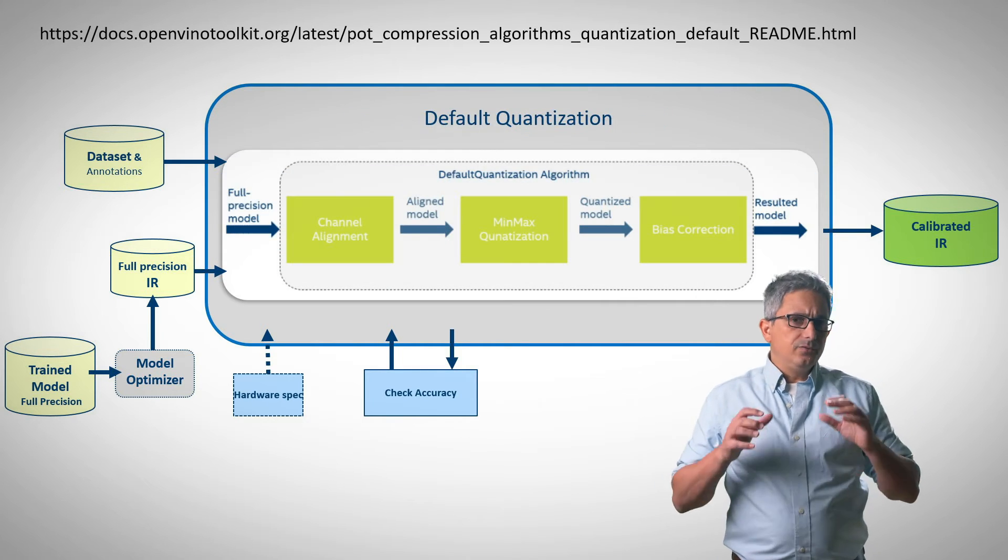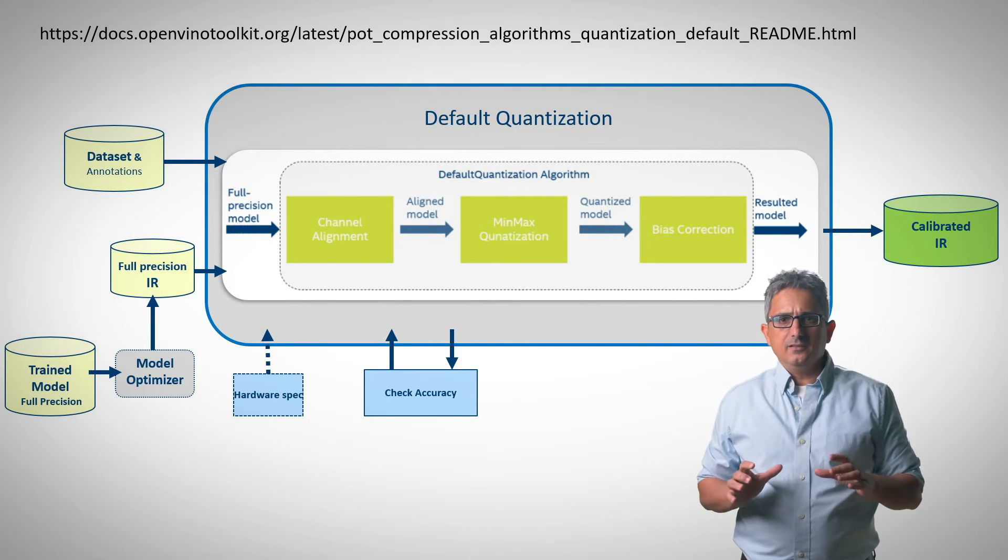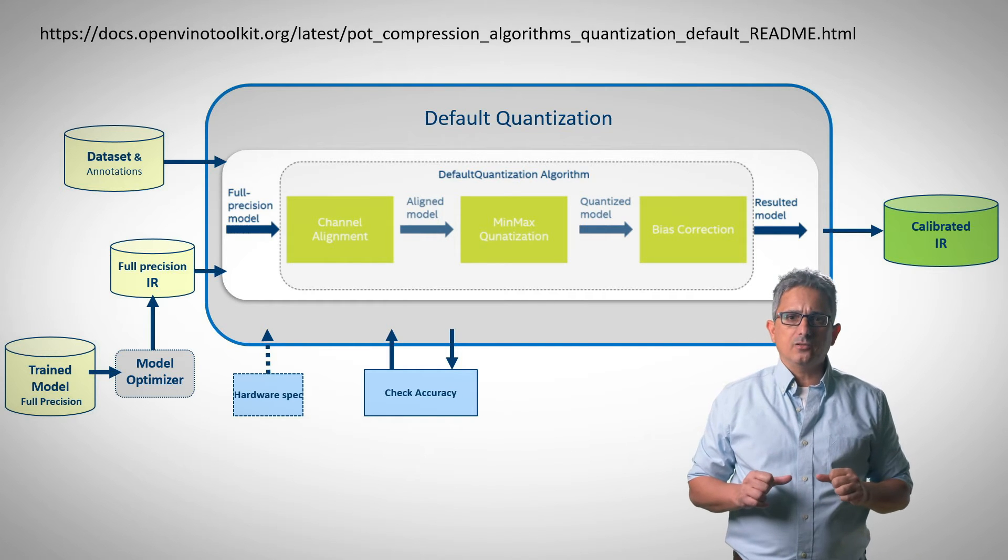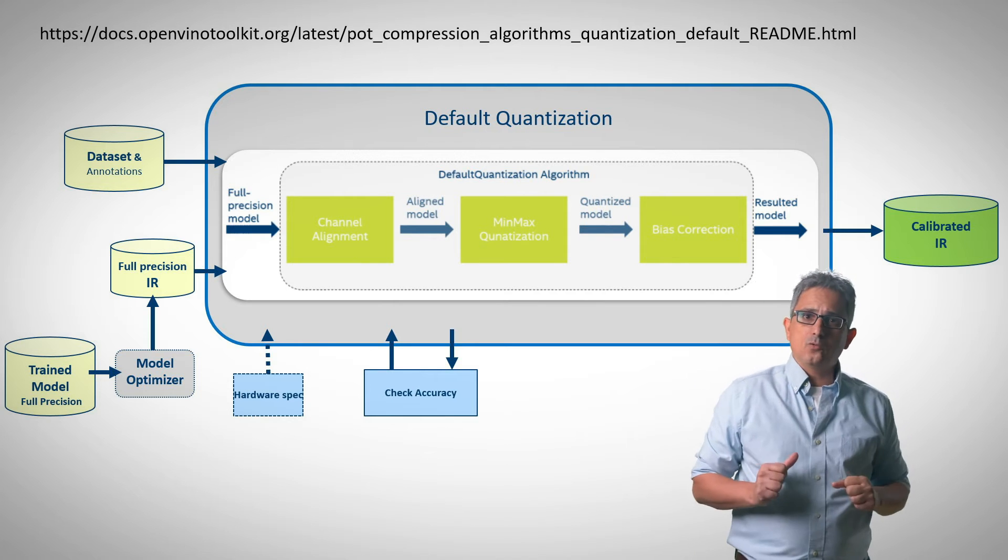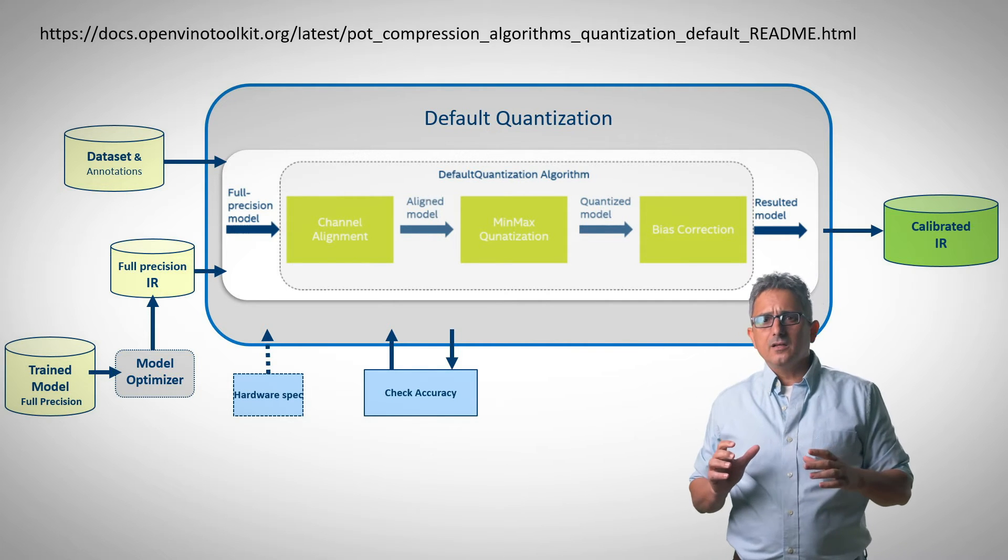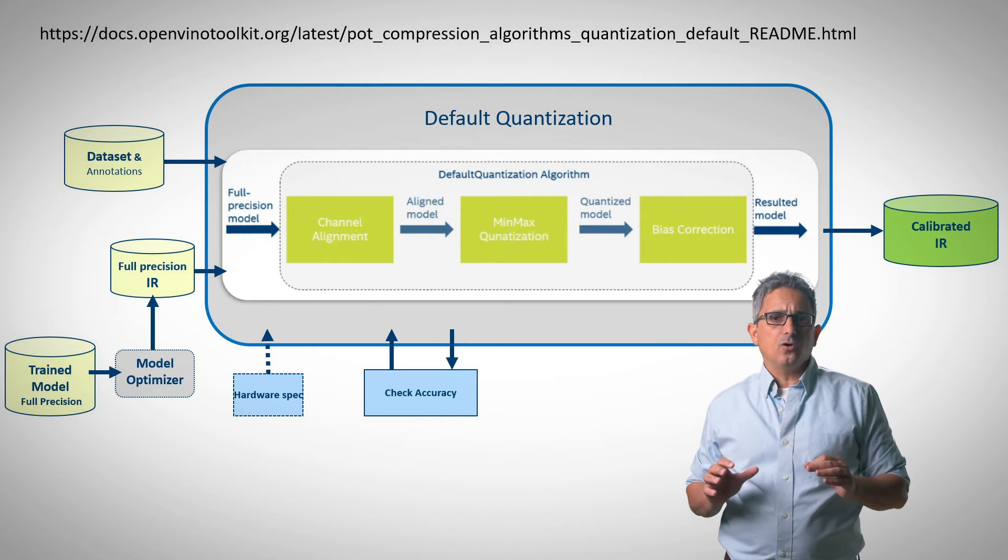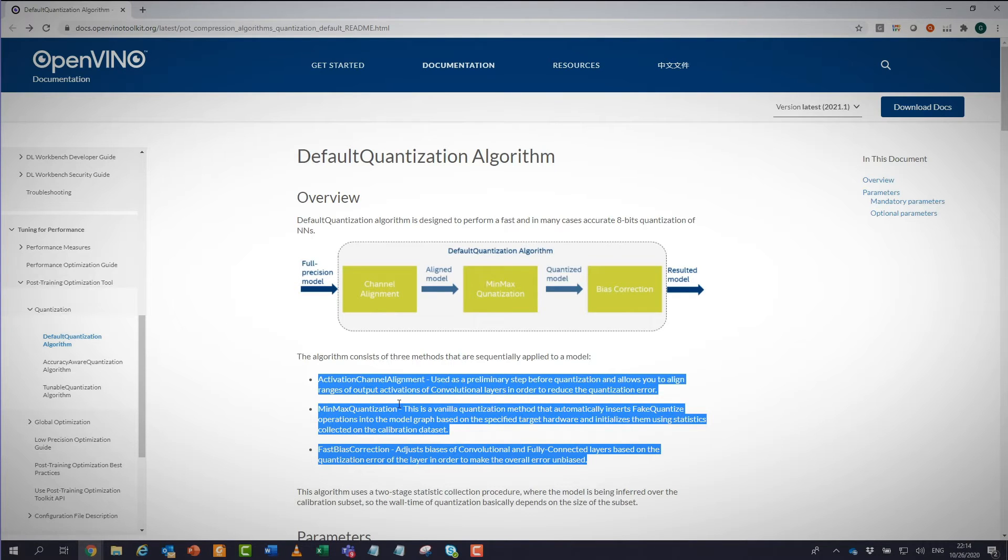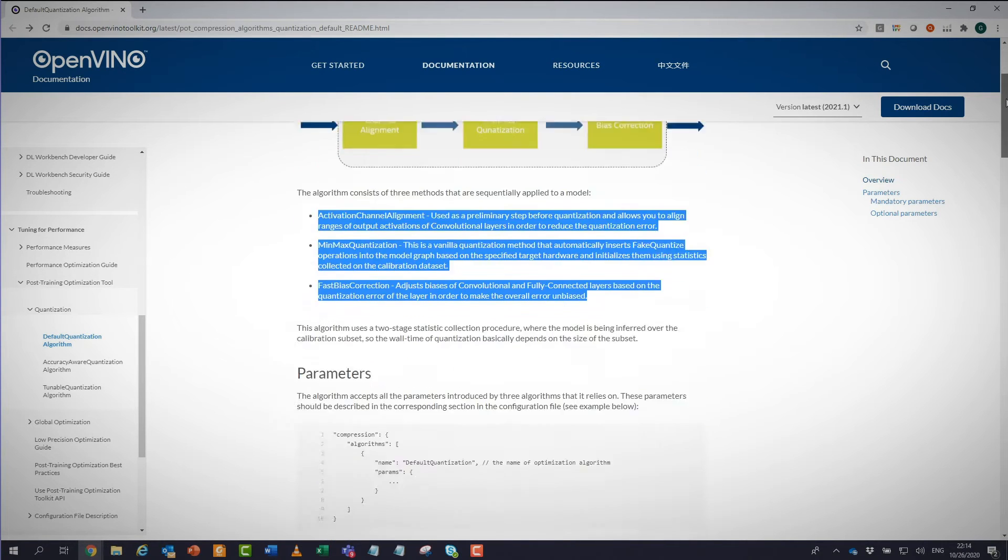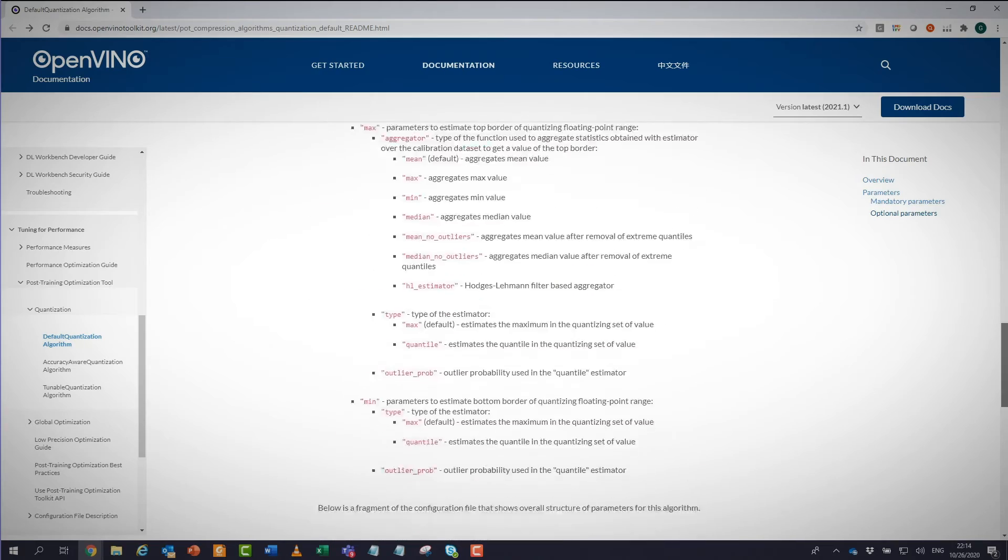The POT can work in two main modes. The first one is the default quantization. The target here is to perform the fastest possible quantization. It will execute relatively faster and it is more performance focused. Despite the fact that it is not accuracy aware, in most cases we saw that the accuracy drop is not that significant. This is a default quantization algorithm. You can read about the full algorithm and the stages and all the possible parameters you can play with in order to control this process.